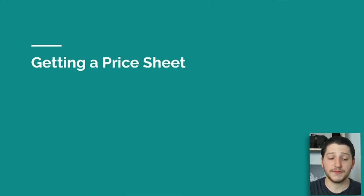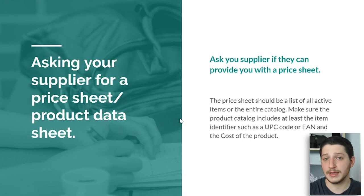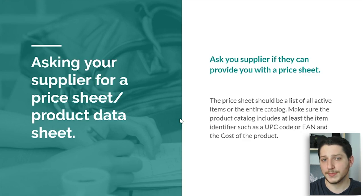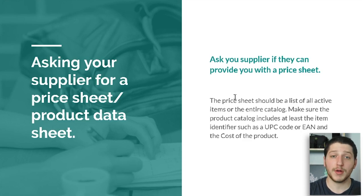The first step is to get a product data sheet from our supplier, also known as a price sheet. You're going to ask your supplier for a price sheet by calling or emailing them, or if you're working with a larger wholesaler, you can go directly to their website and download it there. The two most important things we want on the price sheet are product identifiers — either a UPC code, an ASIN, or an EAN — so the scanning software can find the listings on Amazon, and the cost of each item.